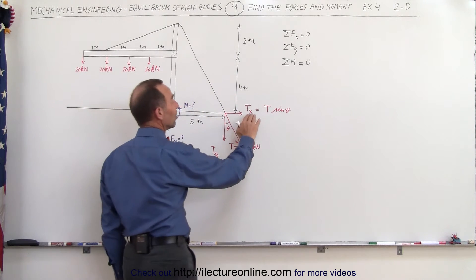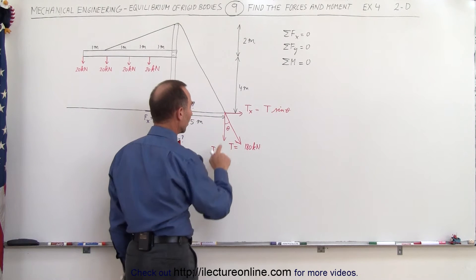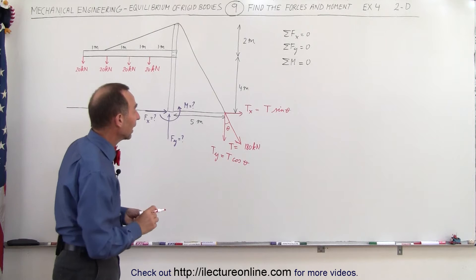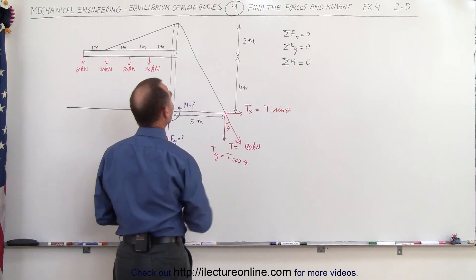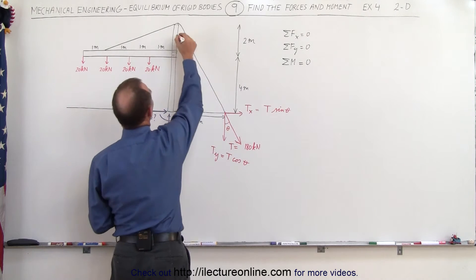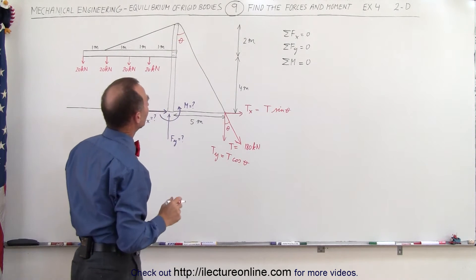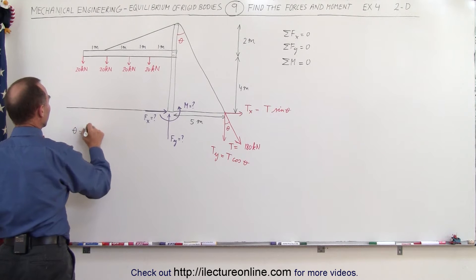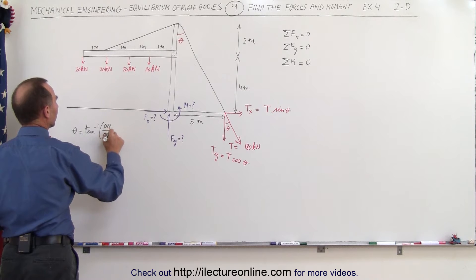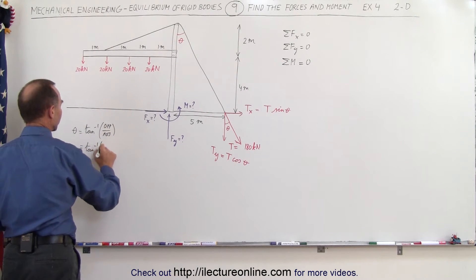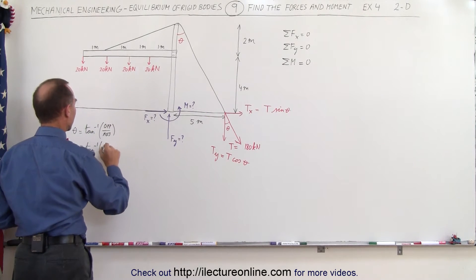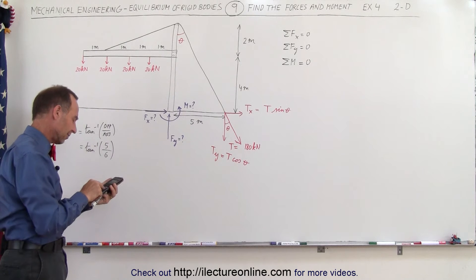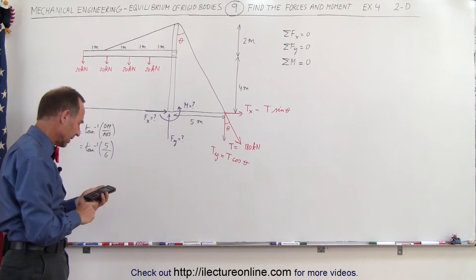T_x equals the tension times sine of theta, and T_y equals the tension times cosine of theta. To find theta, we take the arc tangent of the opposite over the adjacent side. The opposite side is 5 meters and the adjacent side is 4 plus 2 equals 6 meters. So theta equals arc tangent of 5 over 6, which gives an angle of 39.8 degrees.